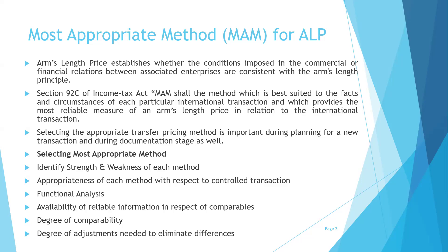Another aspect is the degree of comparability. For example, the CUP method — the comparable uncontrolled price method — requires strict product or service comparability. You have to compare an apple with an apple; you cannot compare the price of an apple with the price of an orange. Therefore, the degree of comparability required will also help in selection of the most appropriate method.